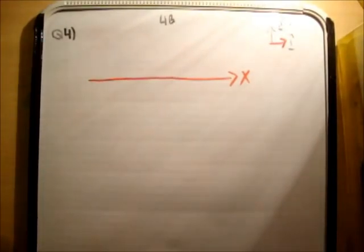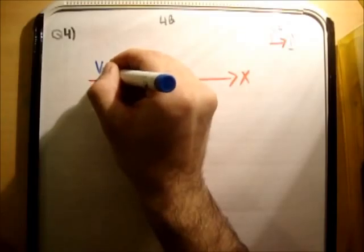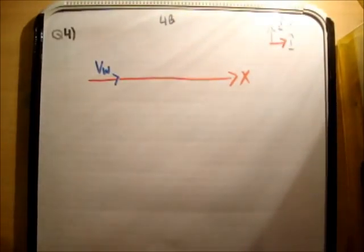The next thing I'm going to do is draw in the velocity of the stream. So I'm going to say the stream flows in the plus i-hat direction. So this is VW, we'll say, velocity of the water.